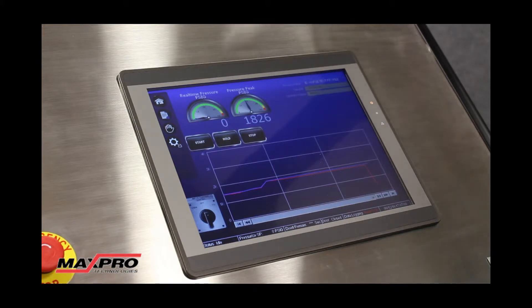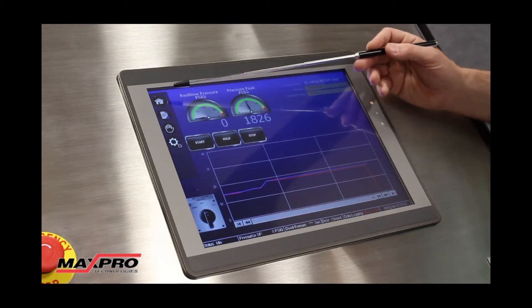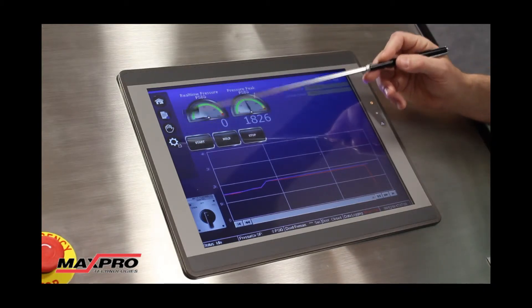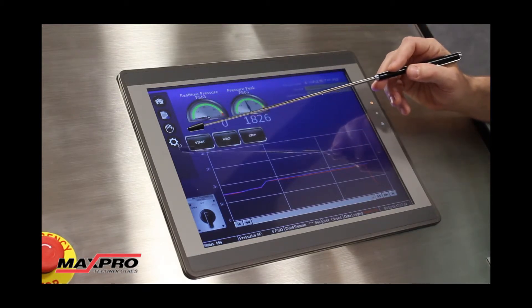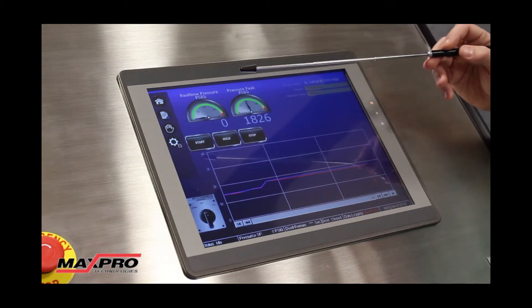What I'd like to do now is walk you through a sample test. When you first turn on the machine it'll start up on the home page. There are four icons here on the left: the settings, manual, recipe, and the home screen. The settings and the manual screen are really used for maintenance purposes.